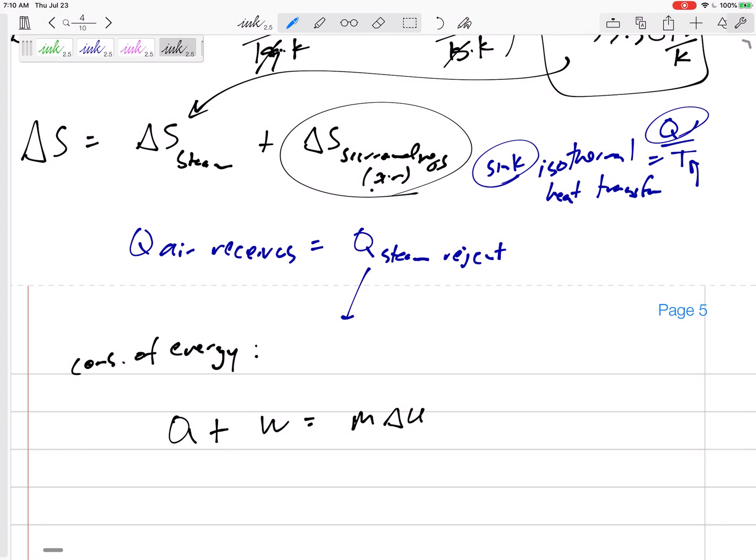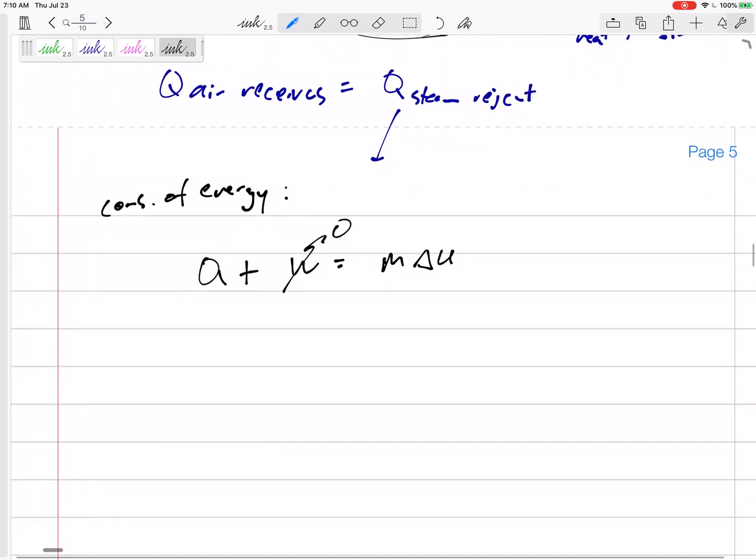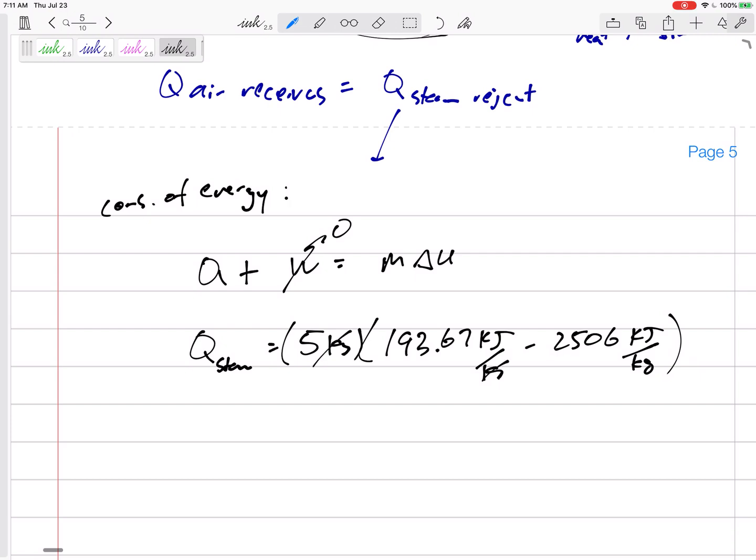Q plus W equals m delta - should this be delta U or delta H? Because it was a rigid tank, it's delta U. That's why I was keeping up with the U's of the steam in this process. There's no work. The Q is m delta U. The Q of the steam is mass of the steam, the delta U of the steam: U2 minus U1. U2 was 193.67 kilojoules per kilogram, U1 was 2506 kilojoules per kilogram. So this is a Q of negative 11,562 kilojoules. It's negative because I was looking at the steam - the steam loses it.